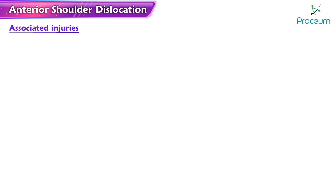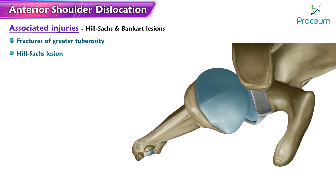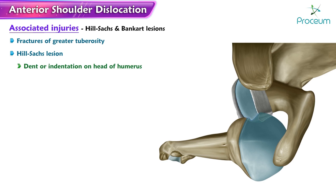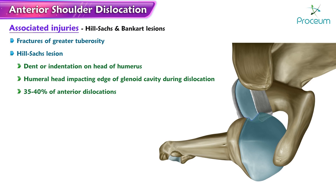Shoulder dislocations can lead to several associated injuries, including Hill-Sachs and Bankart lesions, as well as fractures of the greater tuberosity. A Hill-Sachs lesion refers to a dent or indentation on the head of the humerus, occurring when the humeral head impacts the edge of the glenoid cavity during dislocation. Approximately 35–40% of anterior shoulder dislocations exhibit Hill-Sachs lesions, most often visualized on an AP radiograph with the arm internally rotated.